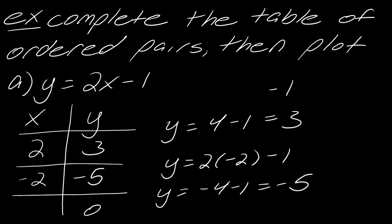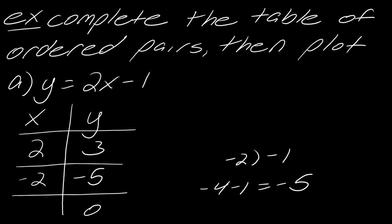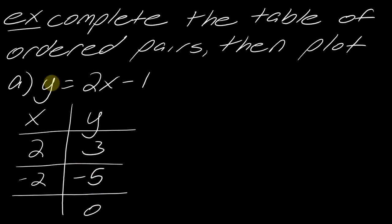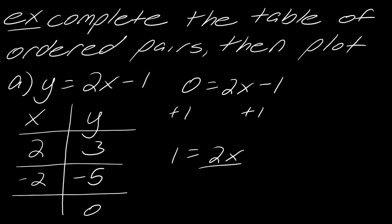Let me clear some space and do the last value. Notice this last value is a y value, so we're going to plug in 0 for y. This gives us 0 = 2x − 1. Now I have to solve for x, so I add 1 to each side to get 1 = 2x, then divide both sides by 2 to get x = 1/2.